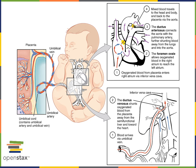As blood flows through the systemic arteries, one of those arteries is the umbilical artery, which carries deoxygenated blood back into the placenta, completing the circuit.